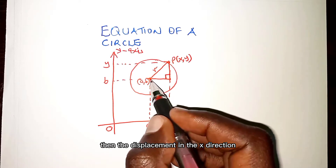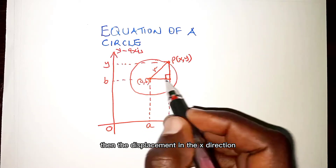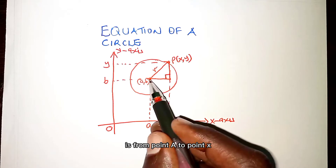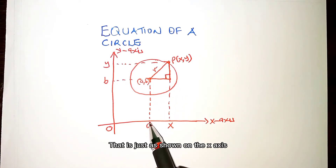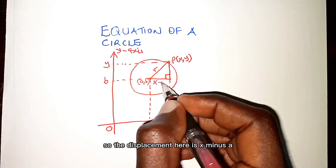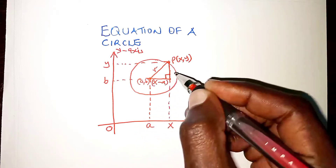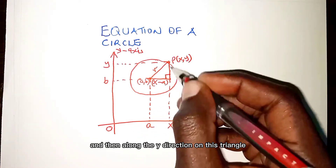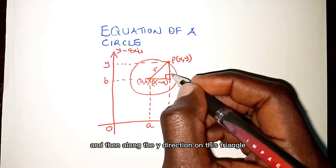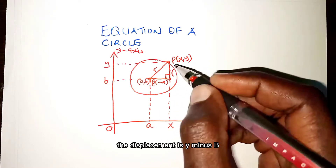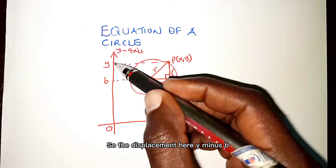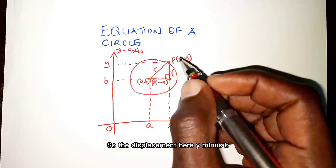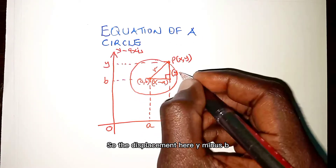The displacement in the x-direction is from point a — that is as shown on the x-axis — so the displacement here is x minus a. Then along the y-direction on this triangle, the displacement is y minus b.